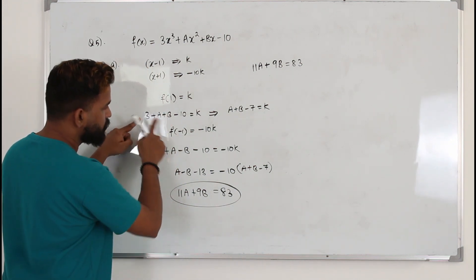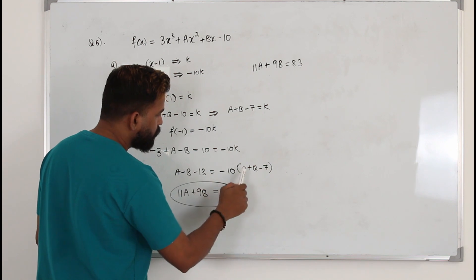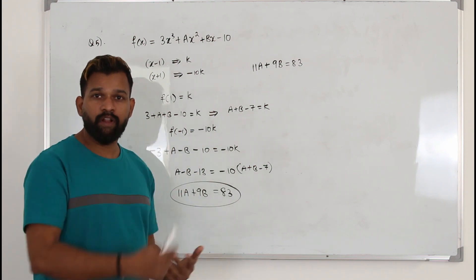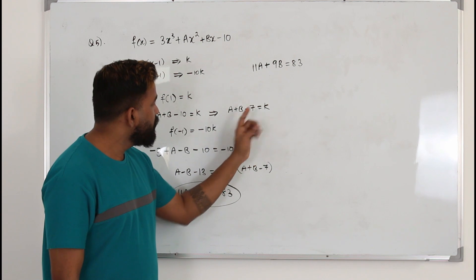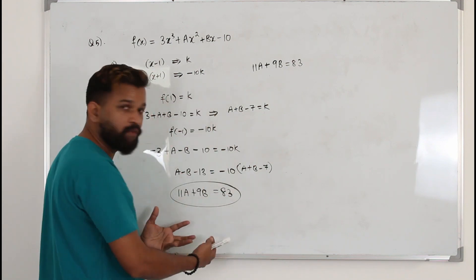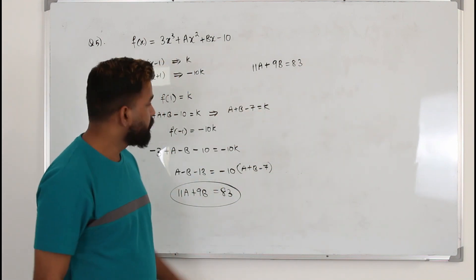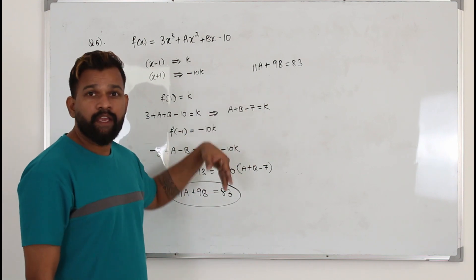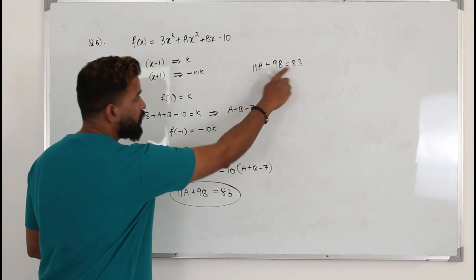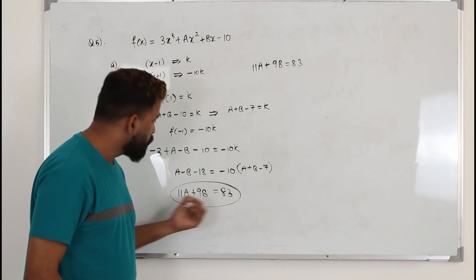The problem is these equations have three variables: a, b, and k. When you have three variables, you need a minimum of three equations to solve. If there were only a and b with no k, you could find those values and plug them in to verify 11a + 9b = 83. But in this case, you cannot solve the simultaneous equations. The only way is to get rid of k — once you eliminate k, you get this equation automatically.